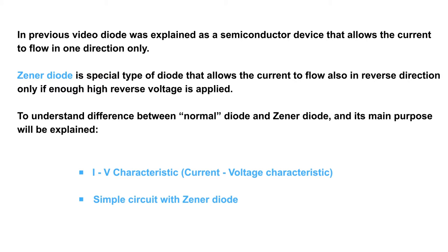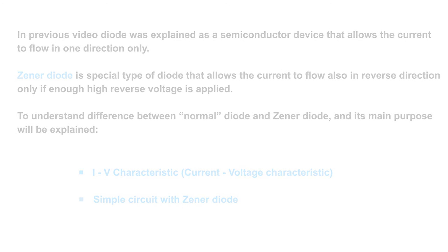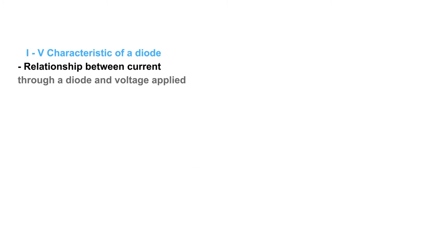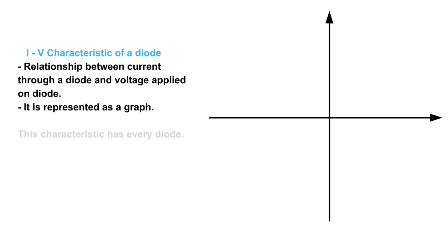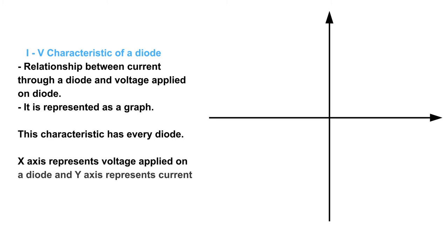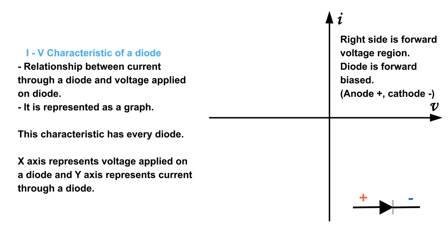I-V characteristic, current voltage characteristic. I-V characteristic of a diode is the relationship between current through a diode and voltage applied on diode. It is represented as a graph. X-axis represents voltage applied on a diode and y-axis represents current through a diode.